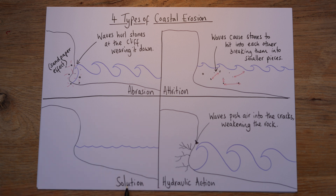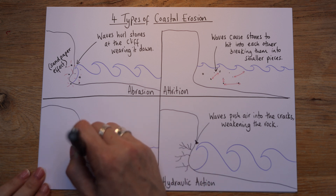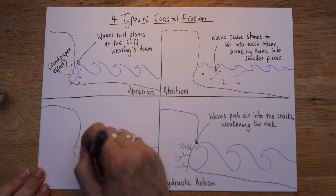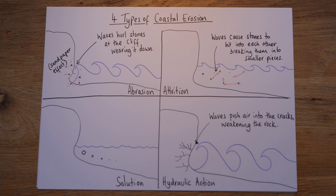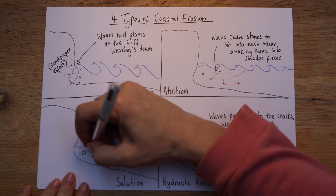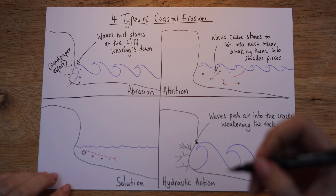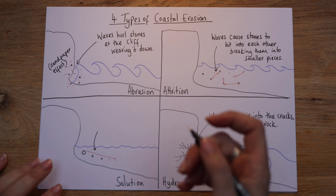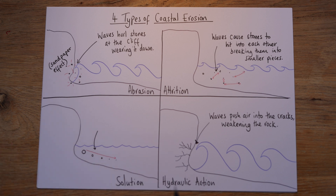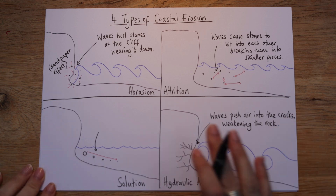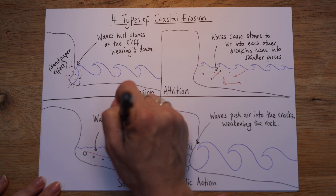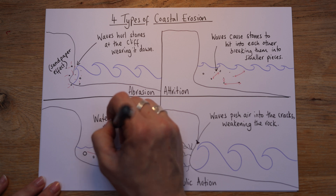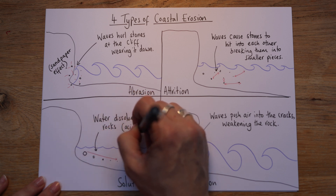Last one: solution — an easy one to forget. Those pieces of shingle and stone get smaller and smaller, but this is a slower process, it takes time. Basically, seawater is slightly acidic and the rocks react with it in a chemical process. The water over time can dissolve types of rocks — quicker for some, slower for others. Just like chalk: if you leave chalk in water, the water goes cloudy and it dissolves even in fresh water. So: water dissolves rocks — and remember there's that level of acidity in seawater.